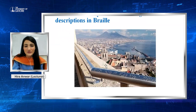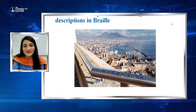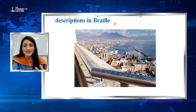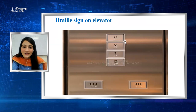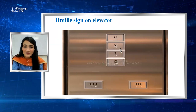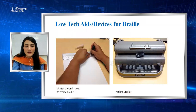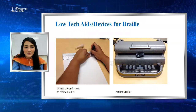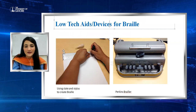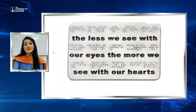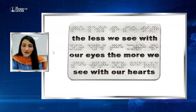This is a beautiful picture of an Italian viewpoint that has a railing description in Braille so that blind and visually impaired persons can also enjoy the view. These are Braille signs placed on a lift in a building. These are Perkins braillers and a stylus to create Braille. This was all about Braille. The less we can see with our eyes, the more we can see with our heart. Thank you so much.